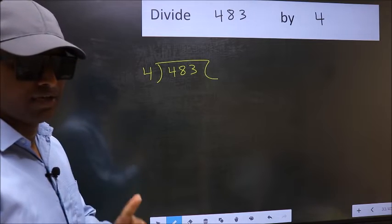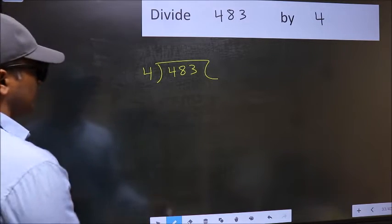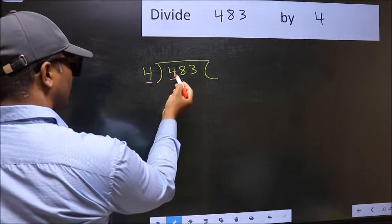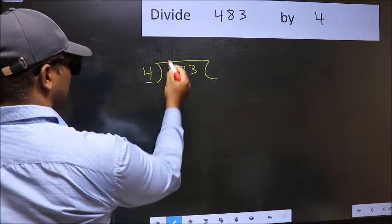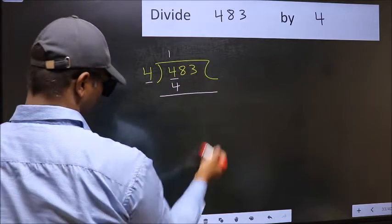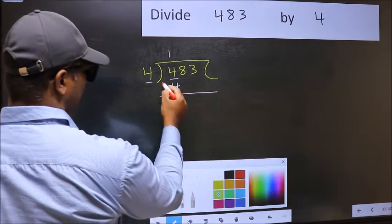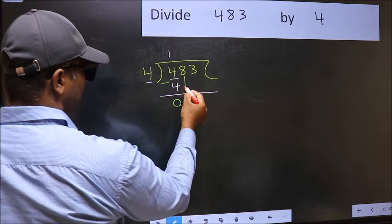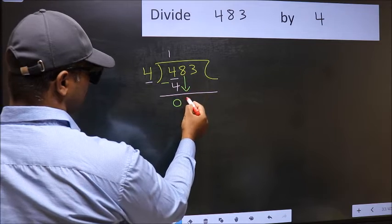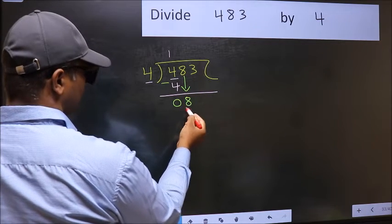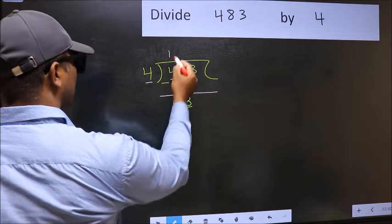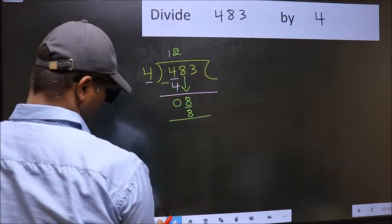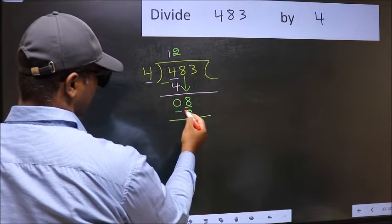Next, here we have 4 and here also 4. When do we get 4 in the 4 table? 4 once 4. Now you should subtract: 4 minus 4 is 0. After this, bring down the beside number, so 8 down. Now 8, when do we get 8 in the 4 table? 4 twos 8. Now you should subtract: 8 minus 8 is 0.